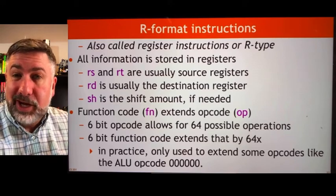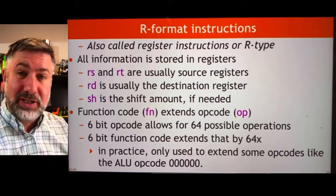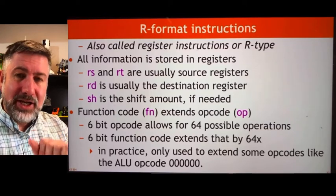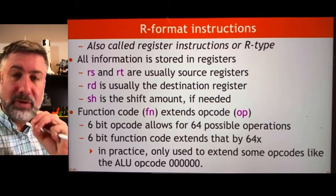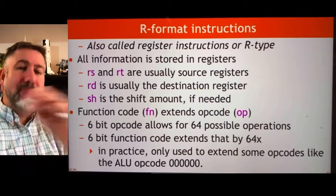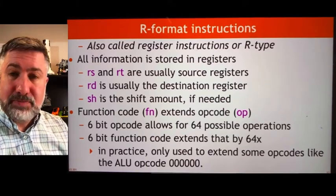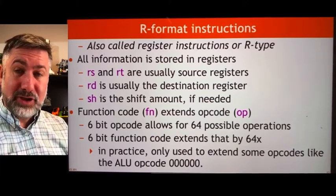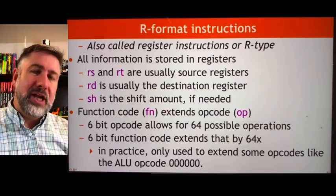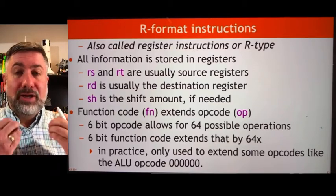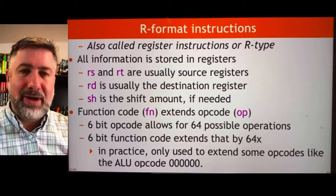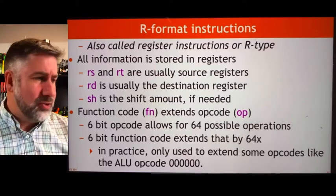They're called R-format because all of the information is stored in the registers. Both sources and the destination are all in registers. You load information from two registers in the register file, you do something to it, and you put the result back in the register file. We have six bits of opcode and six bits of function code—so 12 bits all together to tell the computer what we're doing—and 15 bits all together to tell the computer what operands we're using.